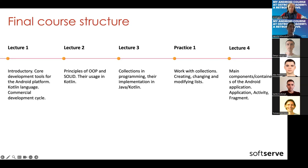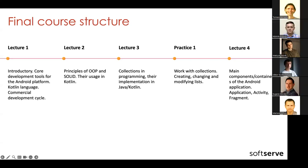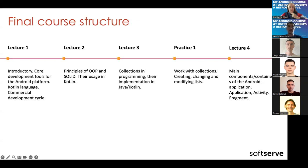Moving on to practice number one: work with collections — creating, changing, and modifying lists. But actually in scope of this practice we also covered sets and maps. And lecture number four: main components and containers of the Android application — classes like Application, Activity, and Fragment. I covered the four main components and then moved to the second part where I presented a simplified model of an Android application: one application container which holds one or more activities, each of which may contain one or more fragments.